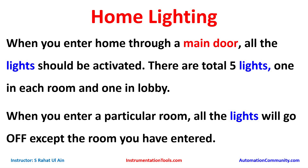There will be one sensor at the main door that will detect the presence of someone, and that will be used to turn on all the lights. There will be separate sensors at each door of each room, and when that sensor is activated it will turn off all other lights. There will be total five sensors — one at main door and four at four rooms. The sensor at a particular room will turn off all other four lights, and the light in that room will not be turned off. In this example we will use normally open contacts as well as normally closed contacts.